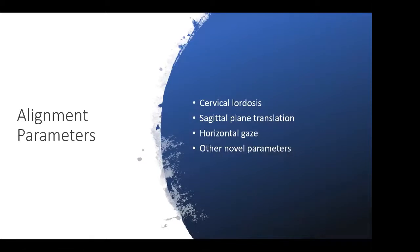The main alignment parameters we're going to talk about are cervical lordosis, translation in the sagittal plane, horizontal gaze parameters, and other novel parameters that have been gaining increasing recognition over the last couple of years.